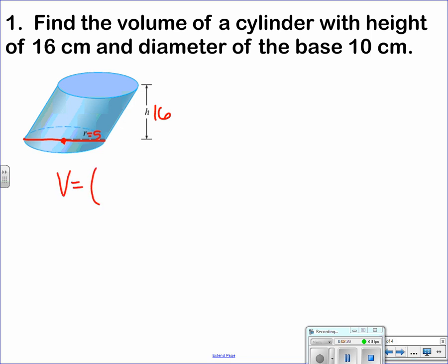we know volume is area of the base times the height. So I have 25 times 16 times π, and that is 400π. And our units are centimeters cubed.